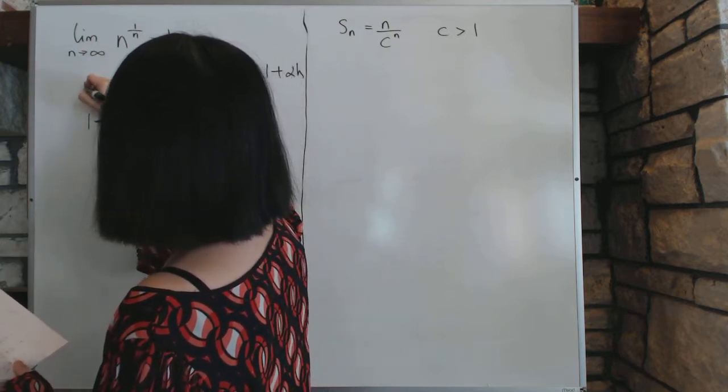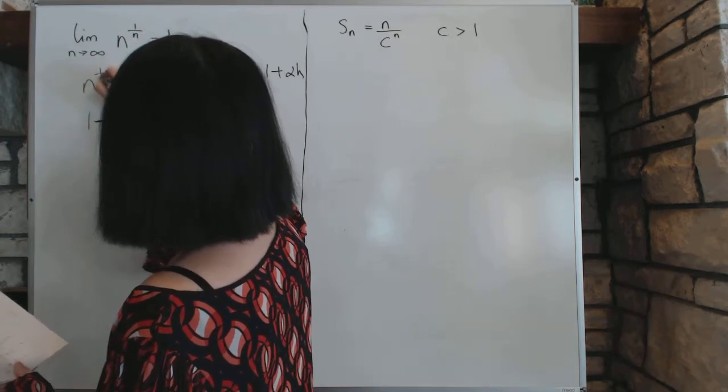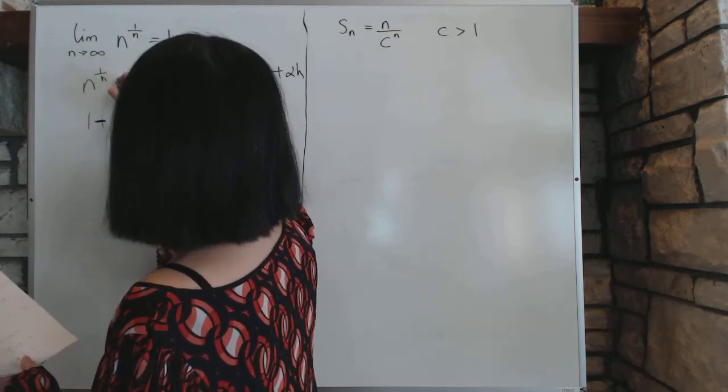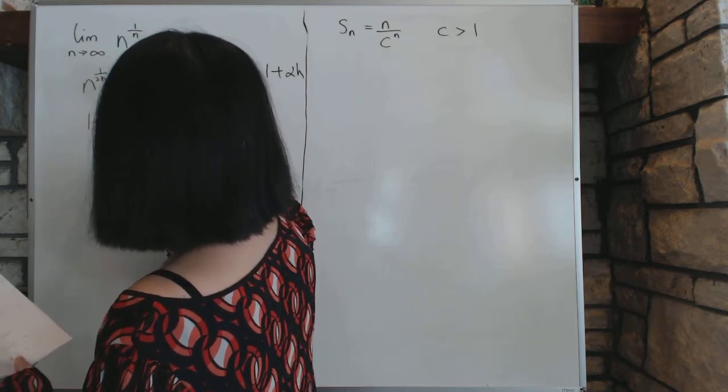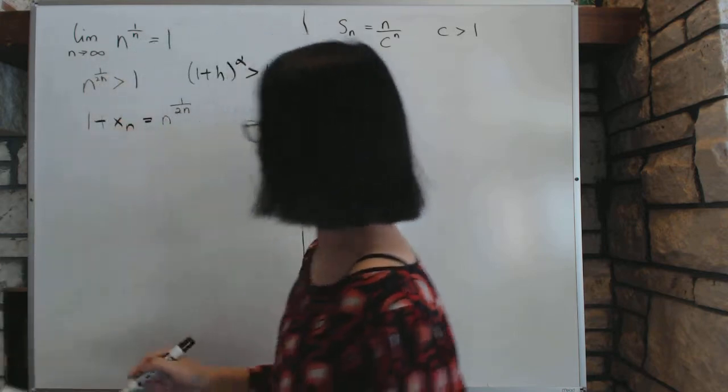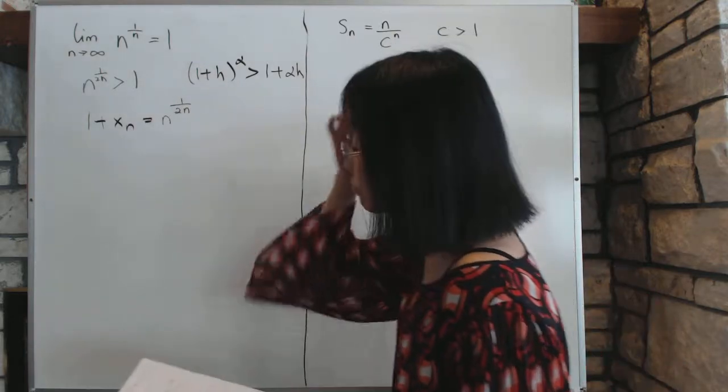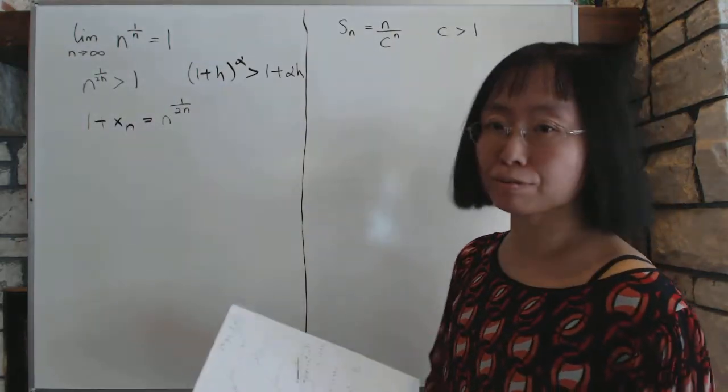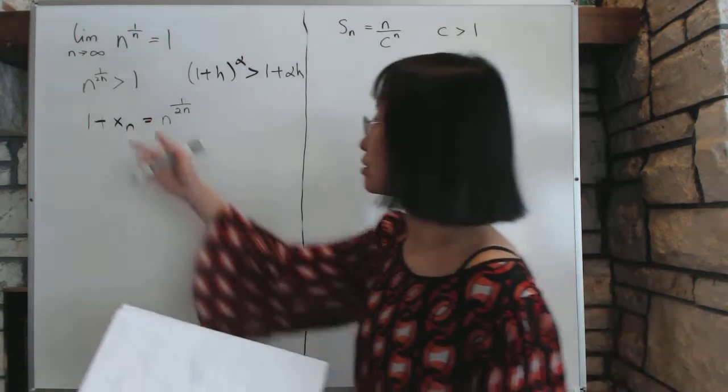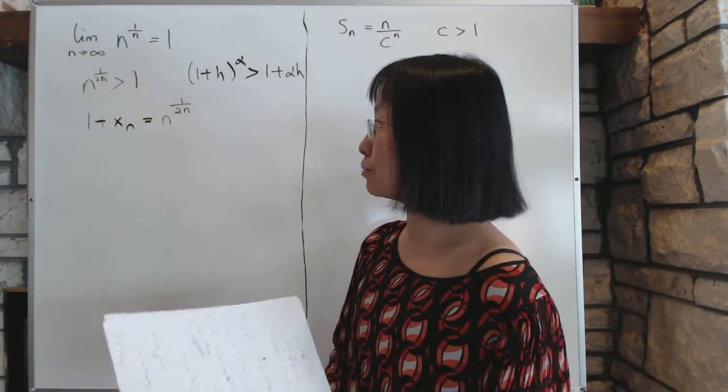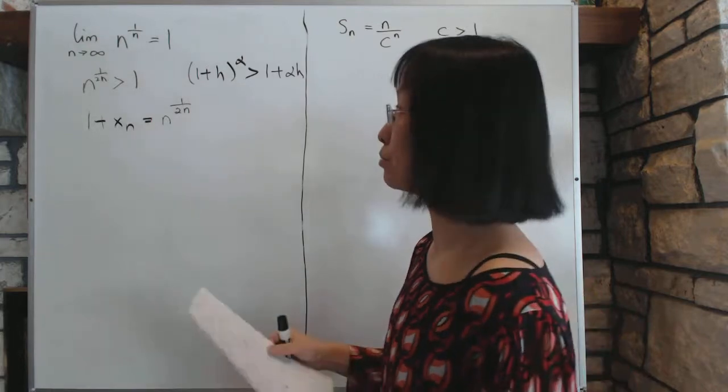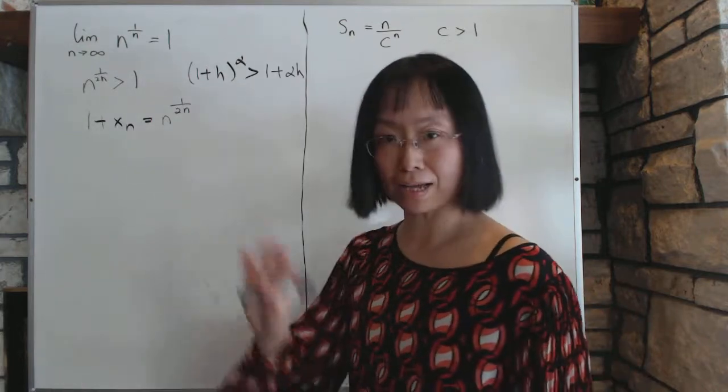First, we should note that n to the power, whatever, n or 2n, this thing is, in this case, 2n, this is a value that is bigger than 1, because n is bigger than, whenever n is bigger than 1. It's something that we proved in an earlier problem, but it's not so intuitively obvious, it's that when a number is bigger than 1, then no matter how many roots you take, it's still going to be bigger than 1. It's not going to suddenly go past that one point.